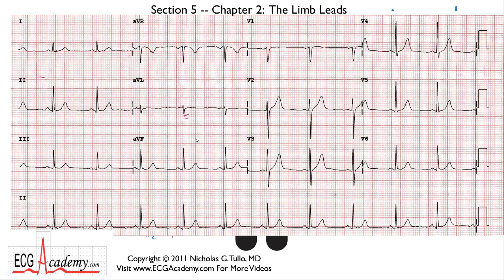The proof of what I was saying is in this ECG — here you have an example where the signal is very large in Lead II but much, much smaller in AVL. This is a similar situation to what I just described: the axis is going in the direction of Lead II, and therefore in the perpendicular direction to AVL, so the signal recorded is much, much smaller.